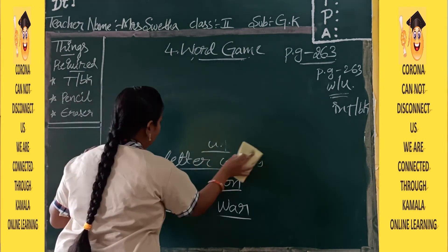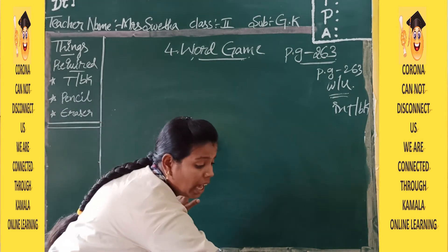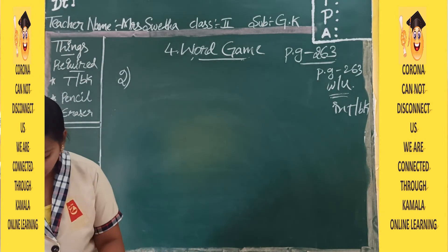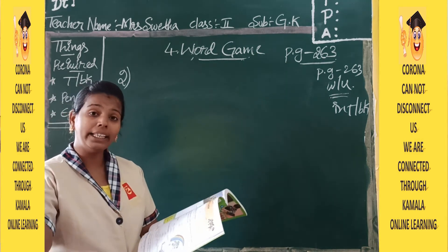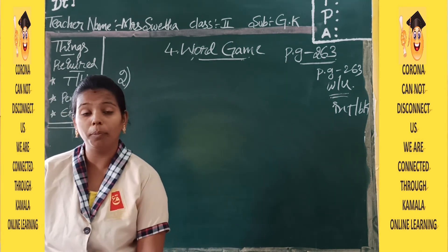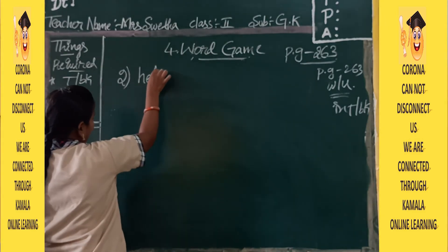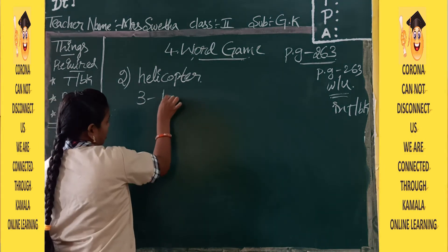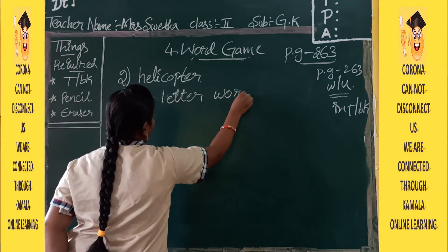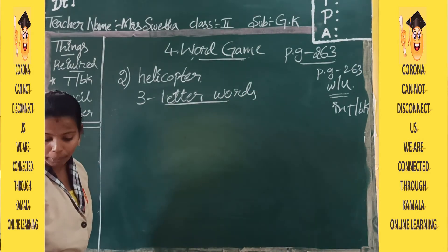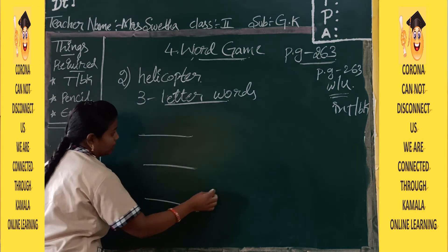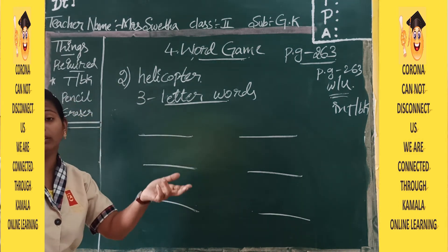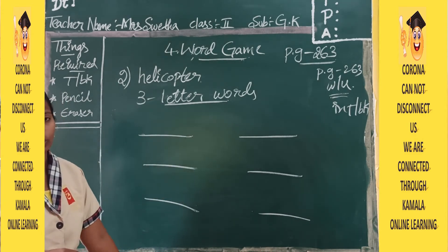In the same way, in the second bit they have given you another task. Now find three-letter words hidden in the word HELICOPTER. From the helicopter spelling, you have to make six three-letter words. Just as we completed the rainbow exercise, from helicopter also we can do it very easily.